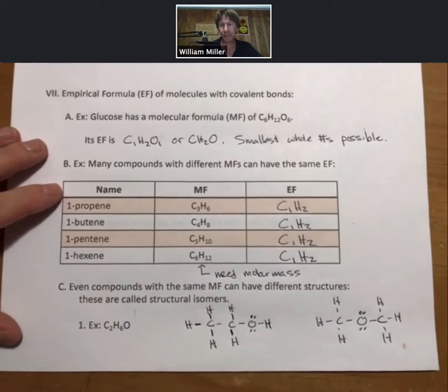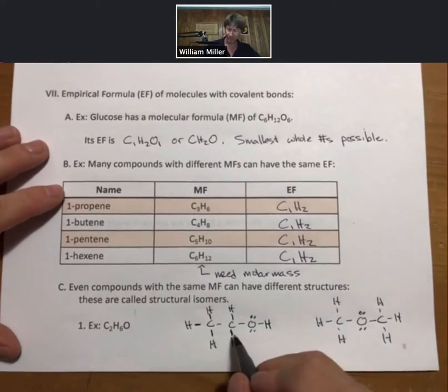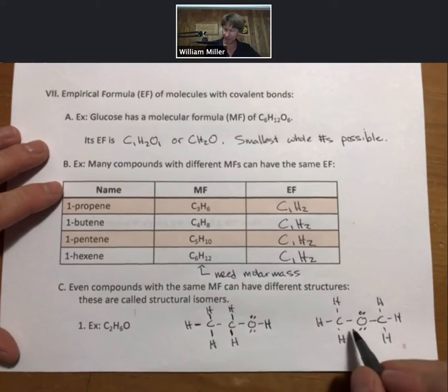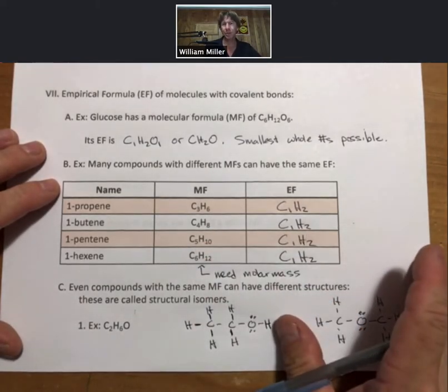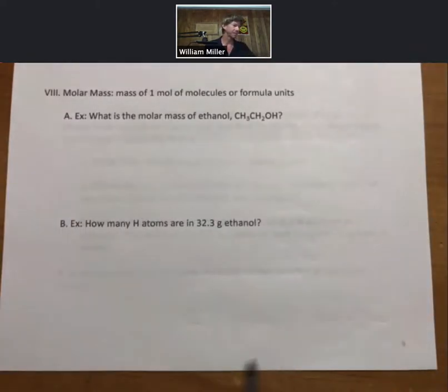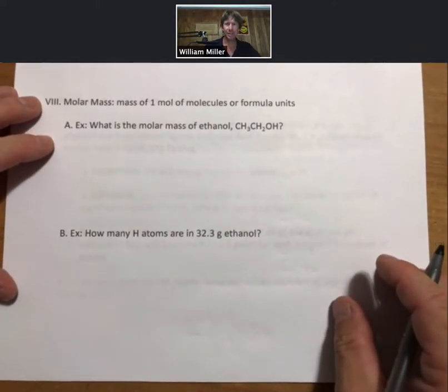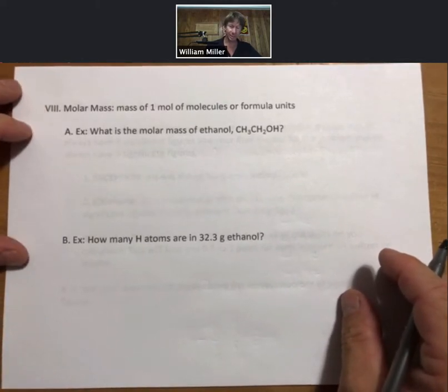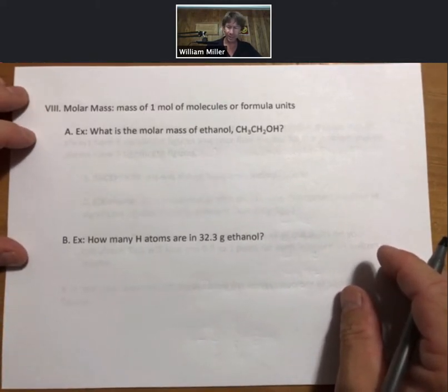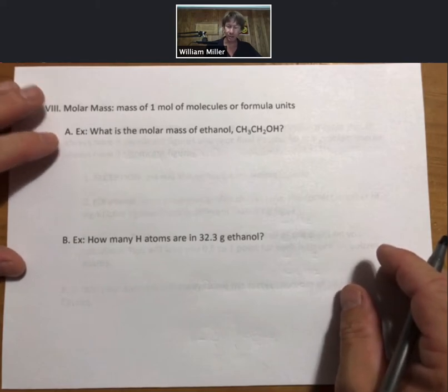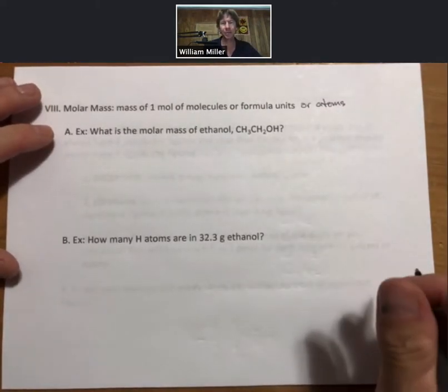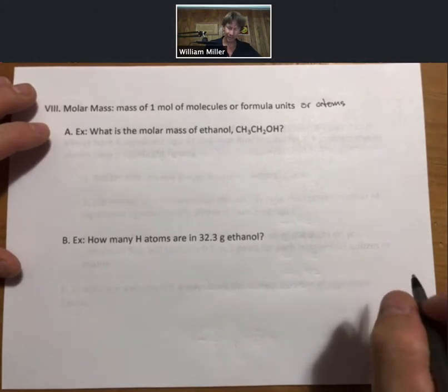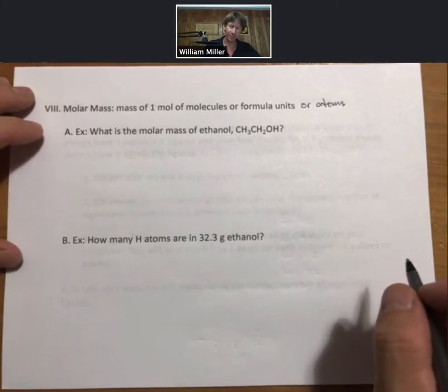Here is C2H6O. The names of these two compounds, not that we have to know them yet, ethanol and dimethyl ether. But again it does get a little more complicated. We're going to stick to molecular formula and empirical formulas. Now molar mass is something that you should be familiar with from the prerequisite for this class. It is the mass of one mole of molecules or formula units or atoms or anything really.